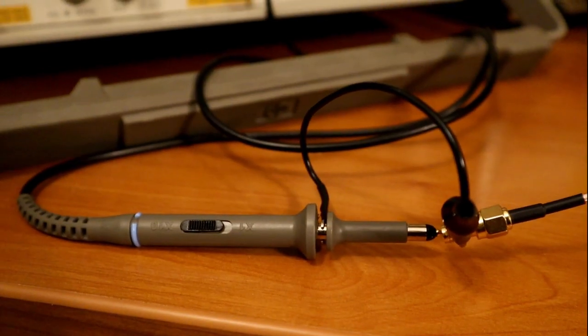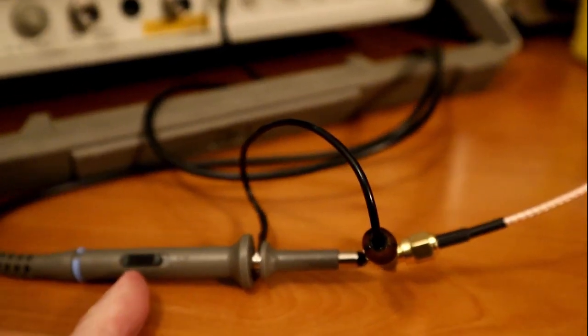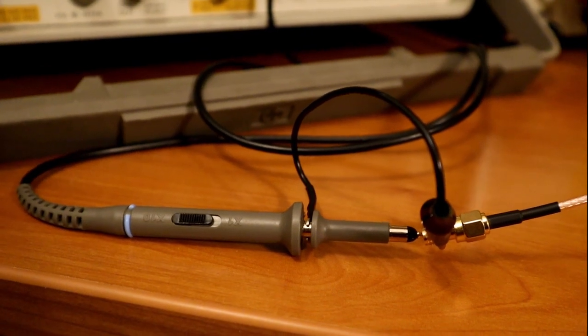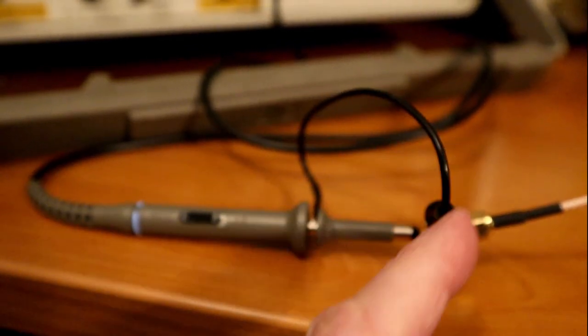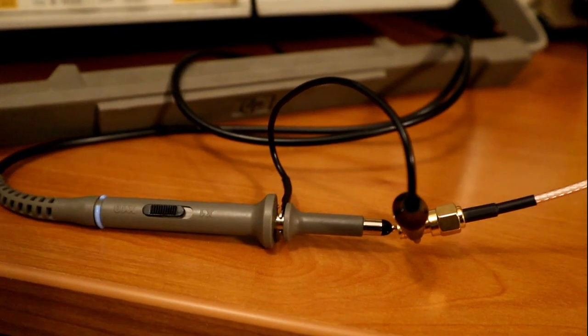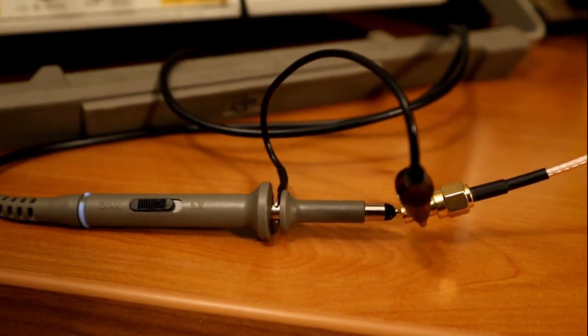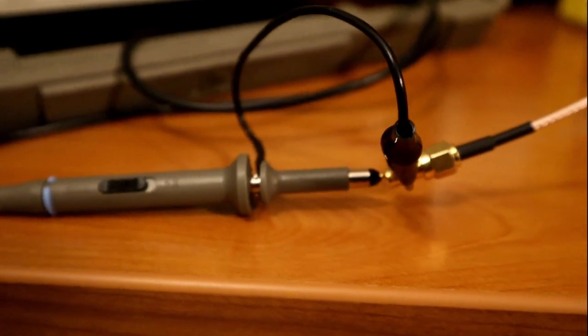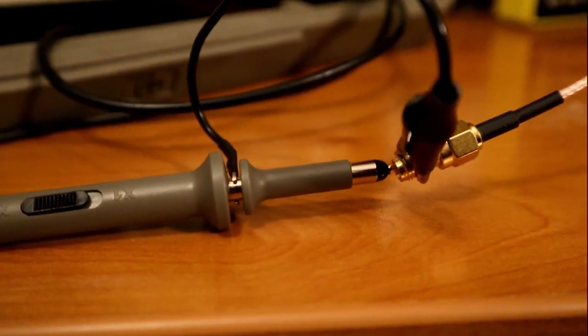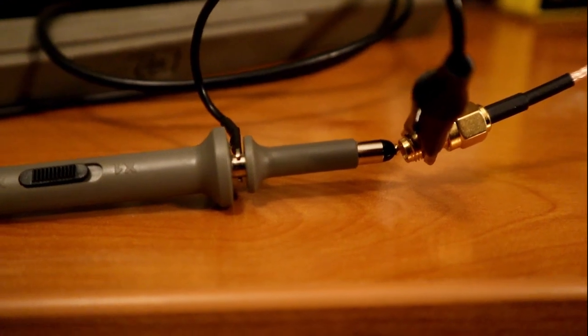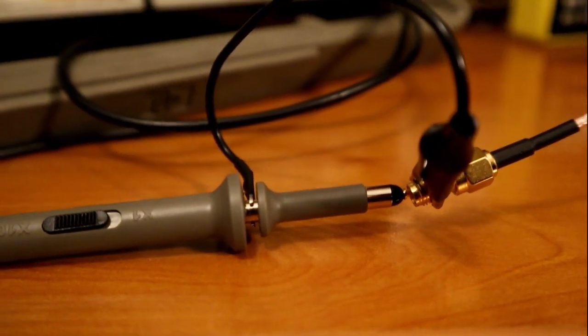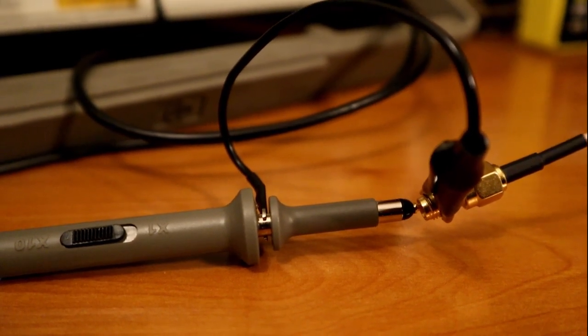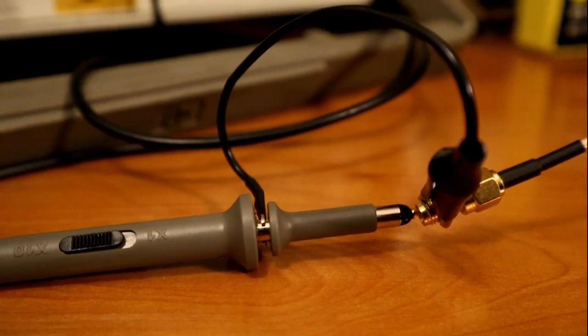Now, a couple of important comments here. I do have this probe set to 10 to 1. Also, I am using the pigtail here to connect to ground, which RF engineers know you probably should not do. We'll take a look at a way to avoid that in a second. In addition to that, I've stuck the tip of the probe into my SMA connector. Never do that unless you own the SMA connector and you're very careful. That's a good way to mess up the input terminal of the SMA connector.